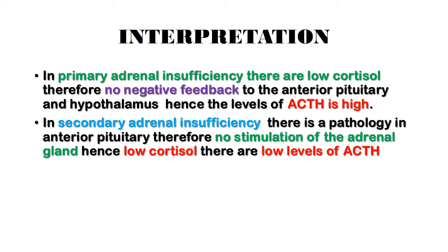In interpreting the results of the short synactin test, it is used to diagnose primary adrenal insufficiency — that is, Addison's disease. In primary adrenal insufficiency, there is low cortisol and therefore no negative feedback to the anterior pituitary and hypothalamus. Hence, the levels of ACTH will still be high.